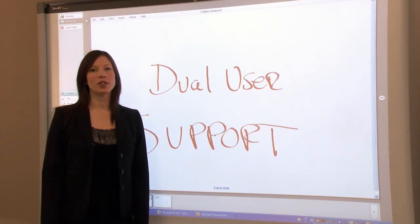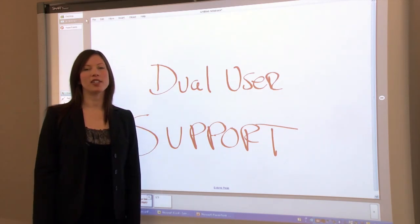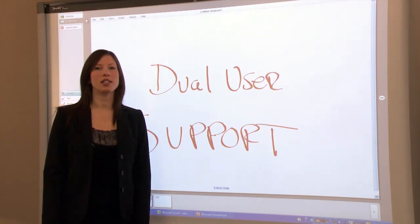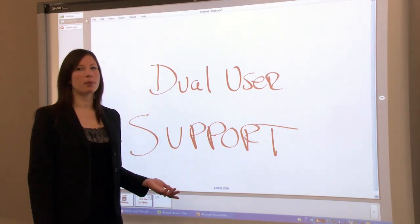With Smart Meeting Pro 2.2 and a SmartBoard 800 series interactive whiteboard, you have dual-user and dual-touch capabilities. So two people can collaborate on the SmartBoard at the same time.